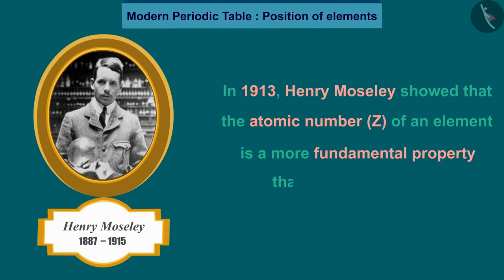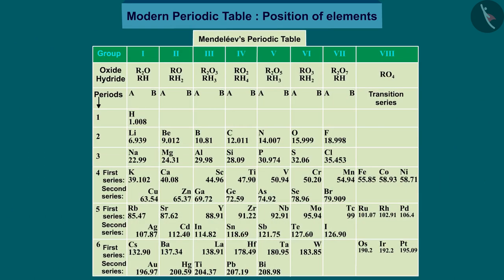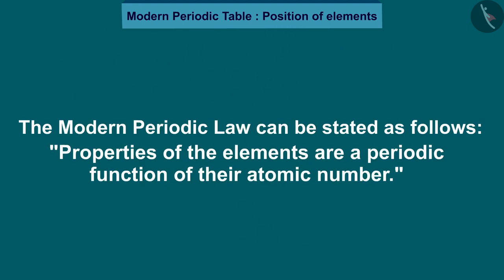Accordingly, Mendeleev's periodic law was modified and atomic number was adopted as the basis of modern periodic table. The modern periodic law can be stated as follows: properties of the elements are a periodic function of their atomic number.